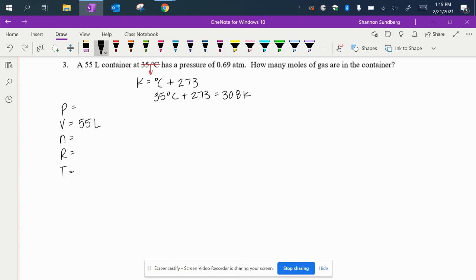35 degrees Celsius we changed into 308 Kelvin and that is temperature. 0.69 atm or atmospheres that's pressure. It's asking how many moles. So that's what we're solving for. Our n value is moles.